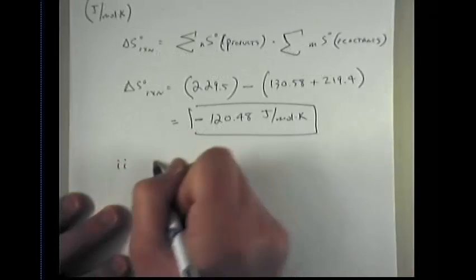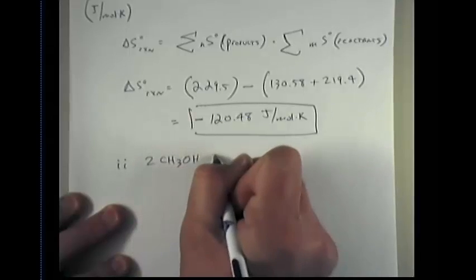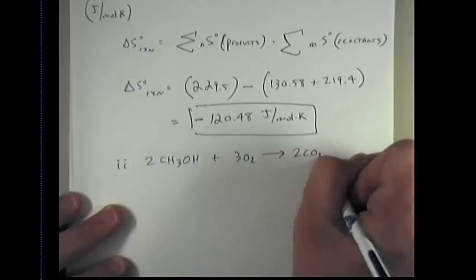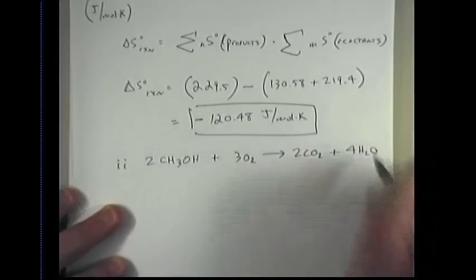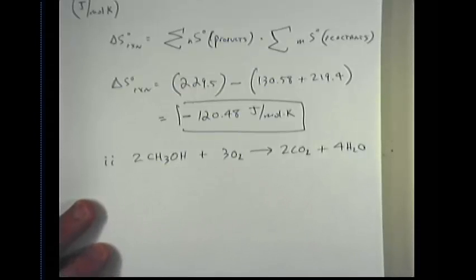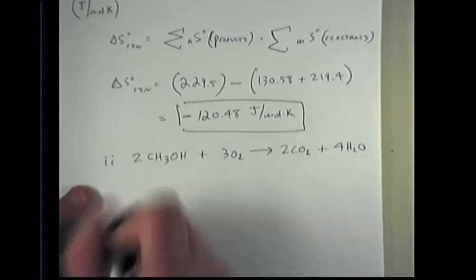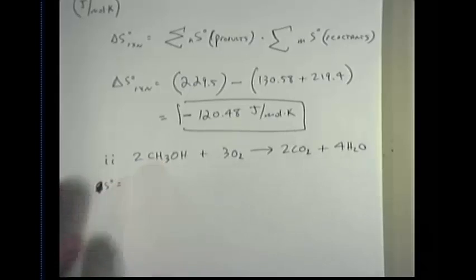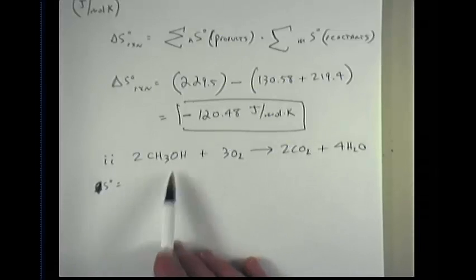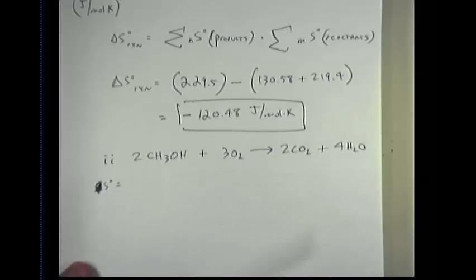For part two, we're given a slightly different equation. We're given methanol, oxygen undergoing combustion reaction to form CO2 and water. I have not written down here the individual states. All of these are gases. I'm just refraining from doing so to save myself time. However, it is very important to do that when you're looking up these values on the table. Otherwise, you may look up the values incorrectly. For example, the S value for methanol as a gas is different from that as a liquid. The same applies for each of the other components.